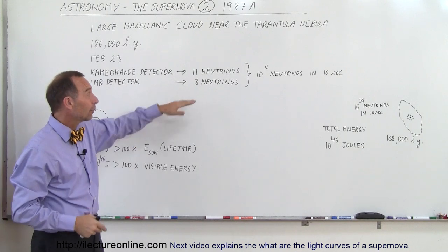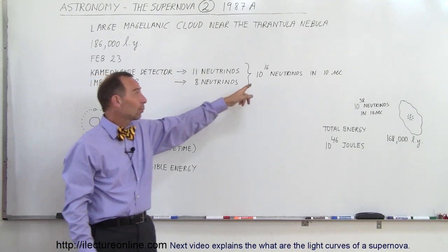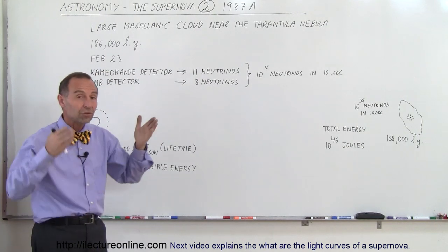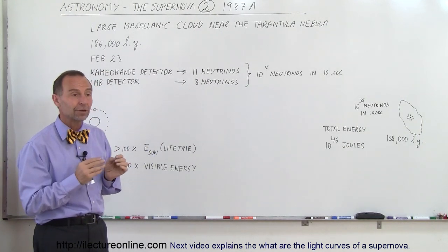When we calculated back, what that must have meant is that we had about a detection of 10 to the 16 neutrinos that must have gone through those detectors in that 10-second period.